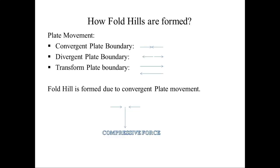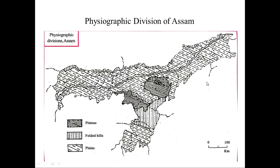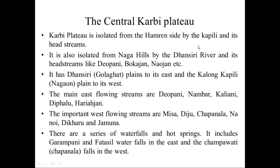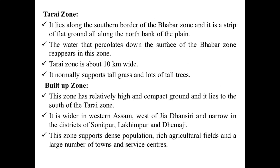The rubber zone is a narrow fertile belt composed of older alluvial soil and is normally densely forested. Next is the Terai zone, which lies along the southern border of the rubber zone. It is a strip of flat ground along the north bank of the plain. Water percolates down the surface of the rubber zone and reappears in this zone. The Terai zone is around 10 kilometers wide and normally supports tall grass and tall trees.